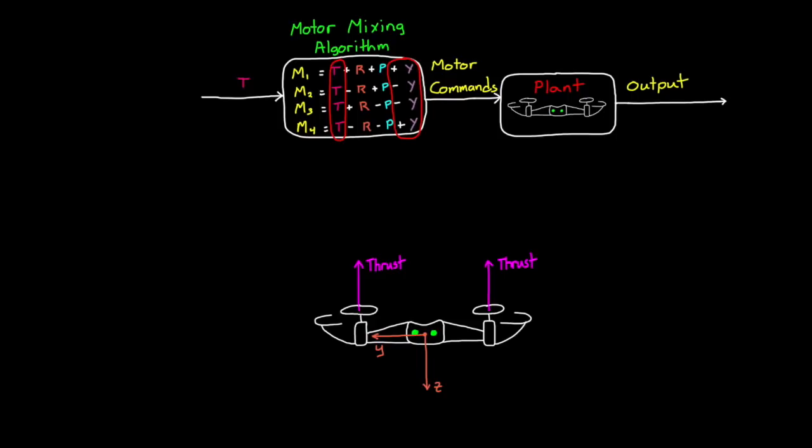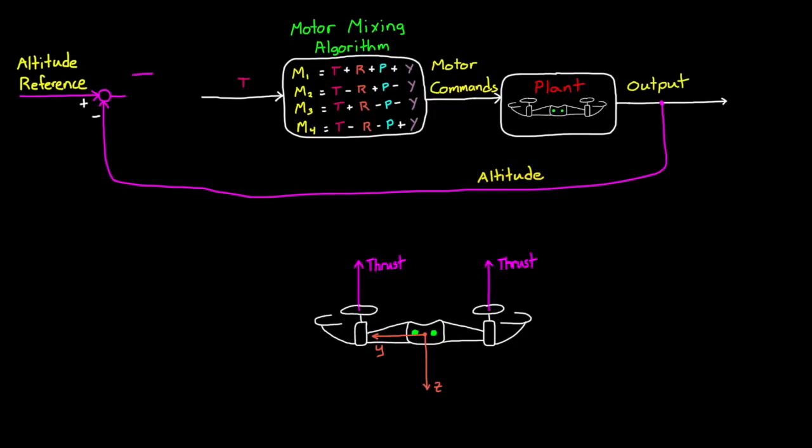To begin, let's build a controller that uses thrust to adjust the altitude. If we're able to measure the drone altitude, then we can feed it back to compare it to an altitude reference. The resulting error is then fed into an altitude controller that's using that information to determine how to increase or decrease thrust. For now, we can think of this controller as some form of a PID controller, and we're going to talk about how to tune it in future videos in this series.